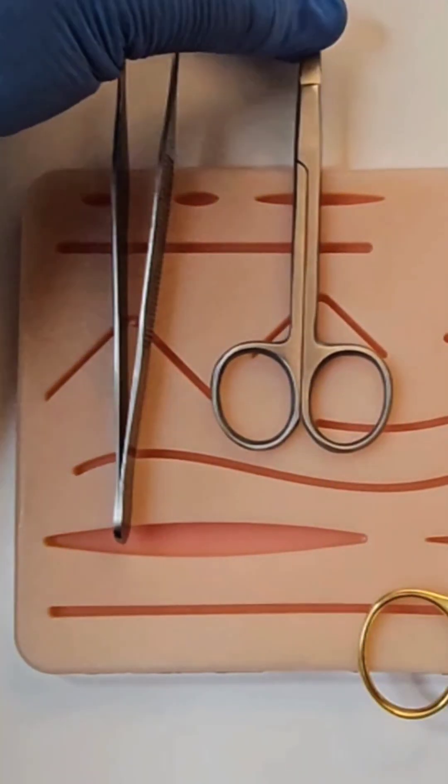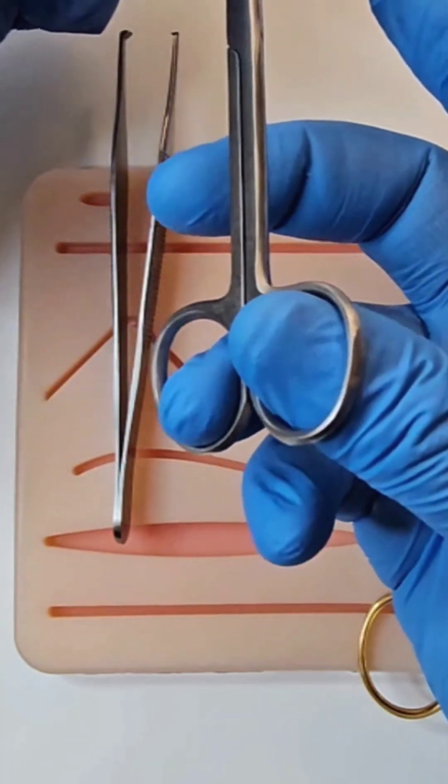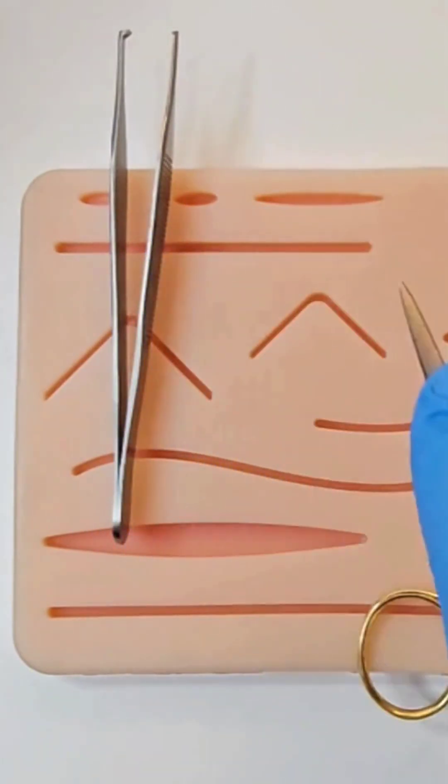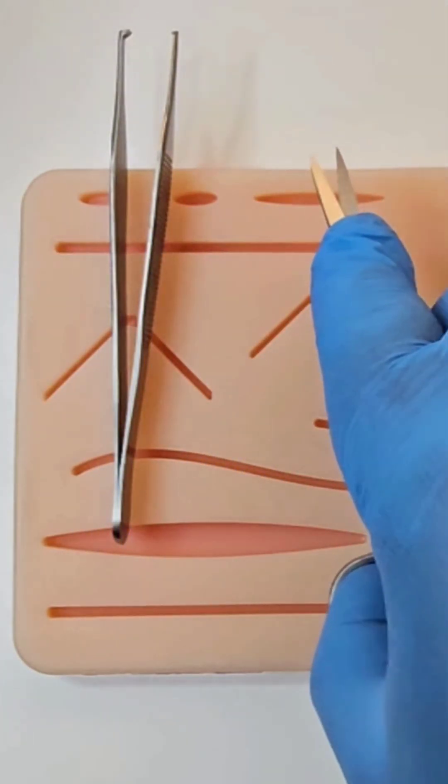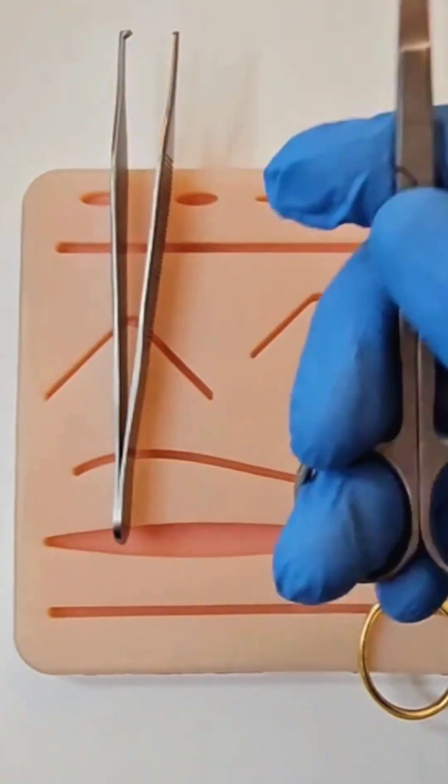The scissors you hold just like you do the needle holder: ring finger, thumb, middle finger on the angle, index finger along the body. Open the scissor, slide down the suture, and cut with the tips. These are typically right-handed instruments.